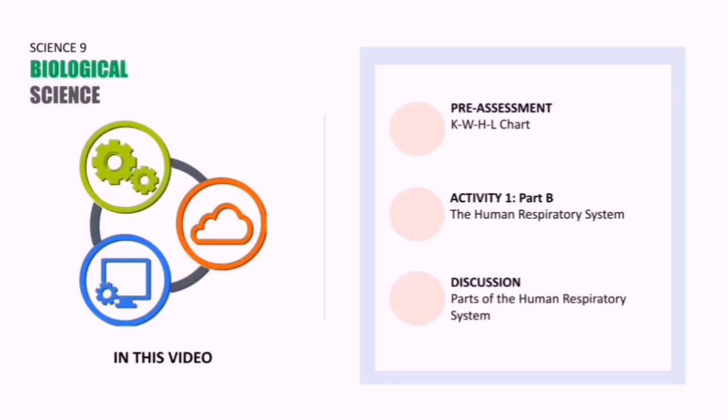This video has three parts. The first part is a pre-assessment — it is a KWHL chart. The second part is an activity, Activity 1, Part B, the Human Respiratory System. The last part is going to be a discussion about the parts of the human respiratory system.